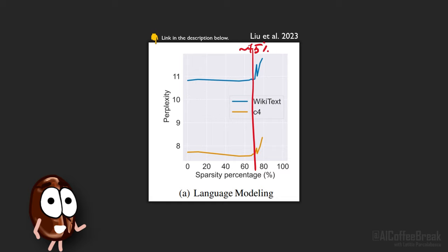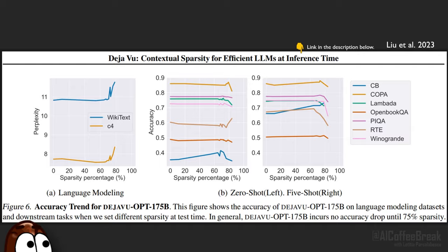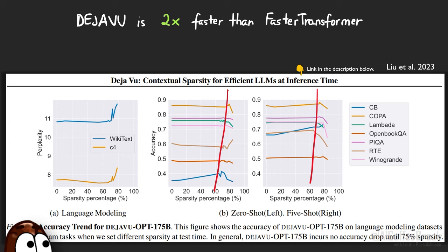It was also successful on downstream tasks datasets, and Déjà Vu was two times faster than the faster transformer implementation from NVIDIA, which is written entirely in C++ and CUDA, and it was six times faster than the most popular transformer implementation in Hugging Face. And this is great news when trying to make LLMs run in real time.